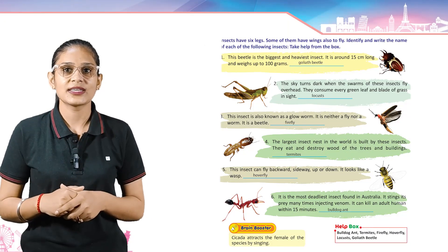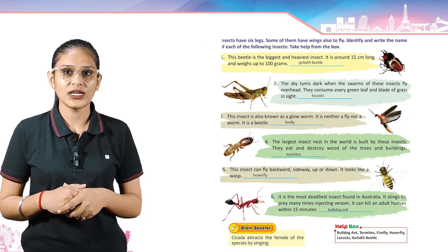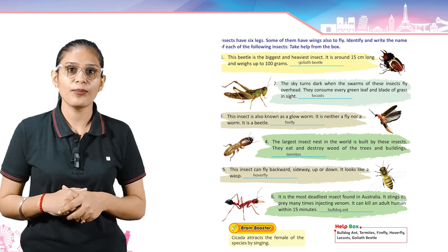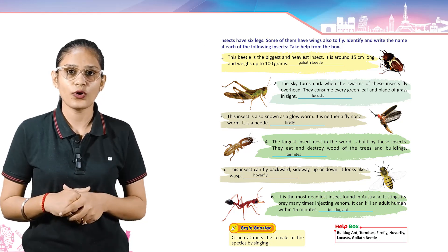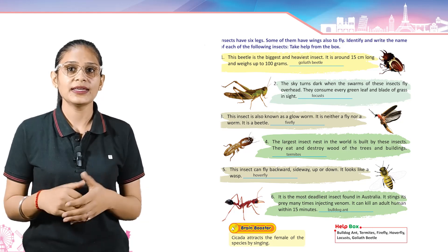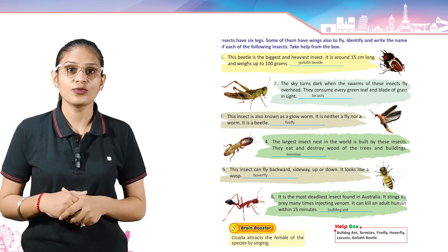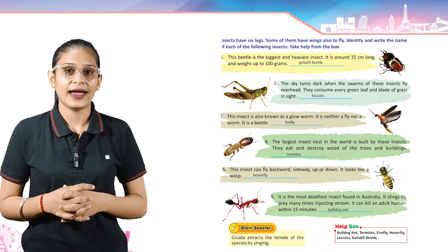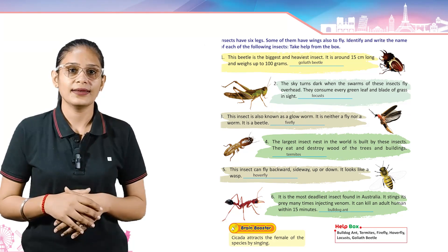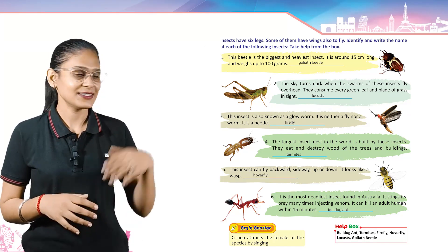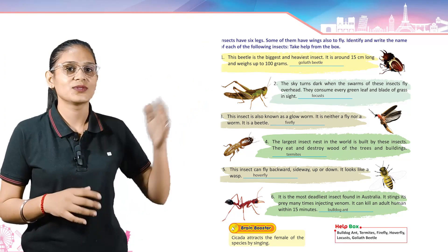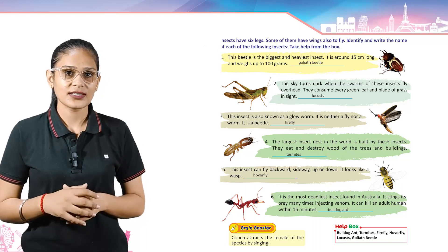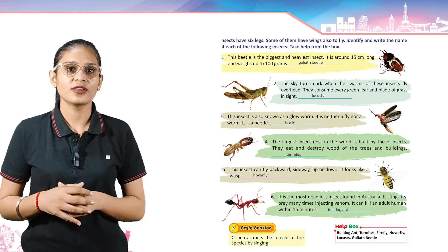Come to the next. This insect can fly backward, sideways, up, or down. It looks like a vase. Its answer is Hoverfly. Come to the next. It is the most deadliest insect found in Australia. It stings its prey many times, injecting venom, and can kill an adult human within 15 minutes. Its answer is Bulldog Ant.